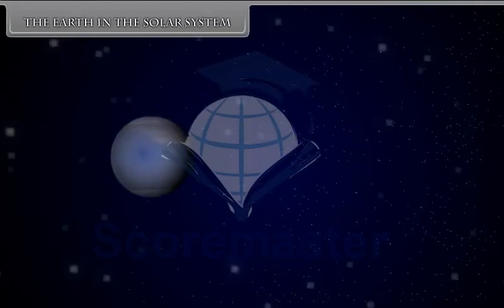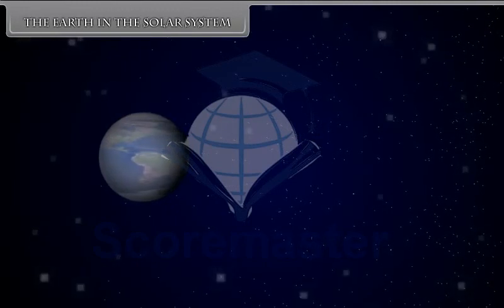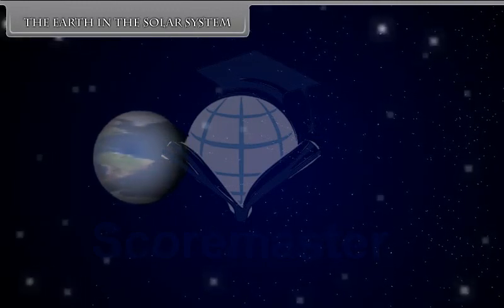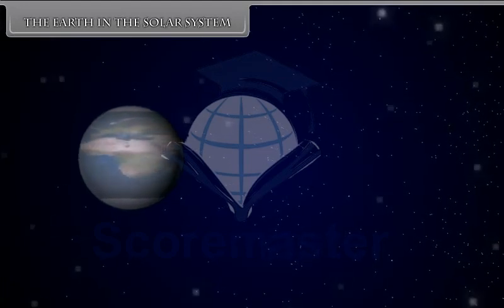The Earth in the Solar System. As night falls, we can see thousands of twinkling objects in the sky. The sun and all these twinkling objects are called stars.